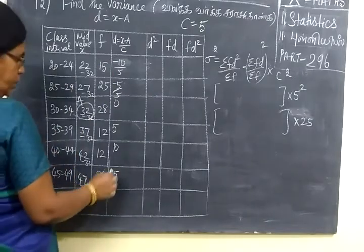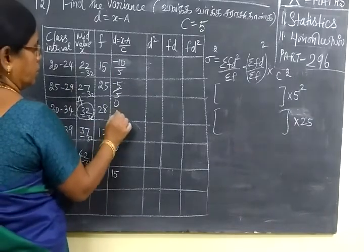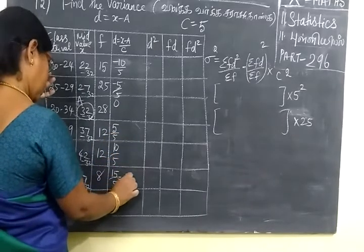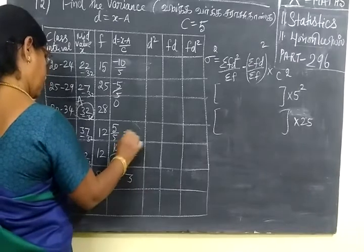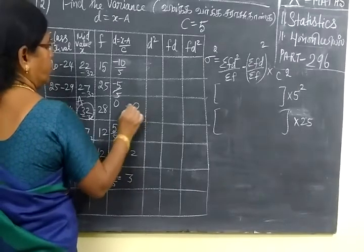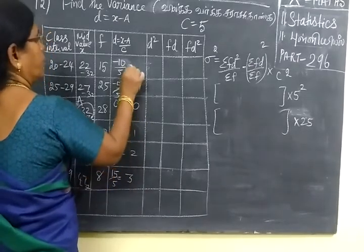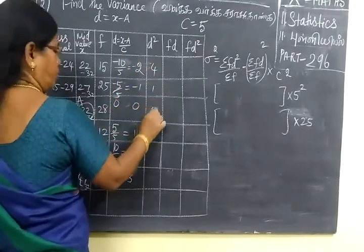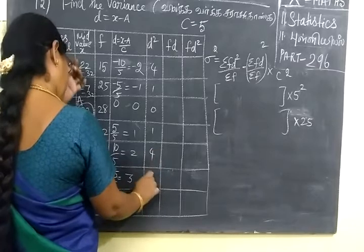Now you write the D' values: 3, 2, 1, 0, then minus 1, minus 2. Now D square 4, 1, 0, 1, 4, 9.